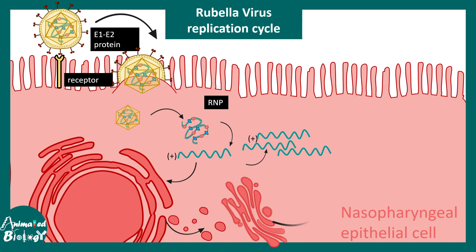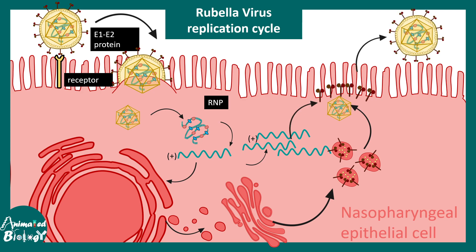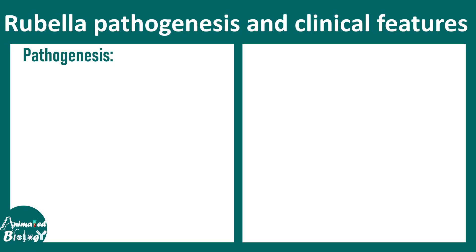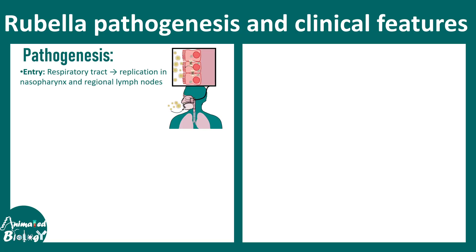The proteins produced are shipped via the Golgi apparatus, and eventually on the surface of the cell a new virus particle is assembled and then released. First the nasopharyngeal cells are affected, then lymph nodes are affected, and then the virus may also enter the blood, causing viremia.